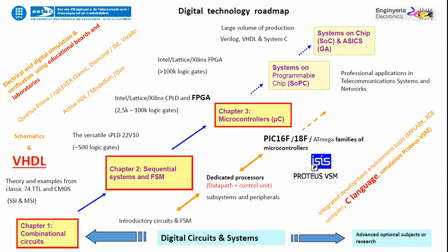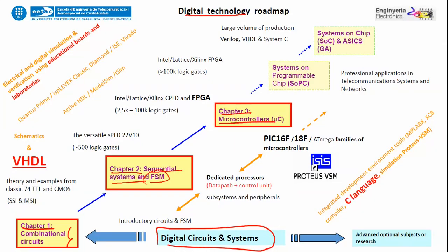Let me introduce you to the Digital Circuit and Systems subject. This subject consists of three chapters: chapter one, chapter two, and chapter three, covering combinational circuits, sequential systems, finite state machines, and microprocessors or microcontrollers. That is the main aim of this introductory course on digital technology.